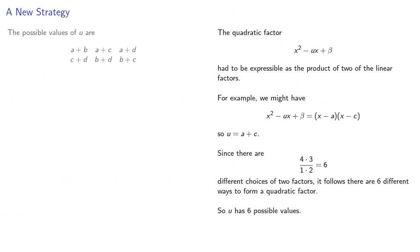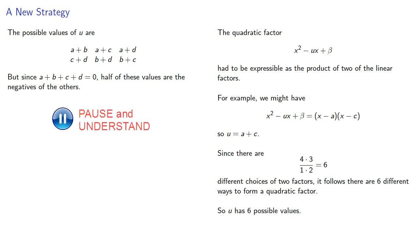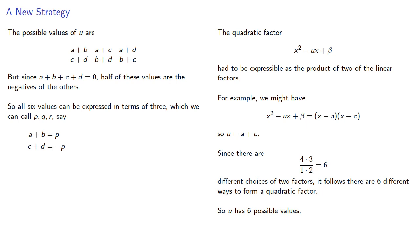And in fact, we can list those explicitly. Now, remember a plus b plus c plus d is zero, and this means half of these values are the negatives of the others. So all six values can be expressed in terms of three, which we can call p, q, and r. Say a plus b is p, and so c plus d is negative p. a plus c is q, so b plus d is negative q. And a plus d is r, so b plus c is negative r.